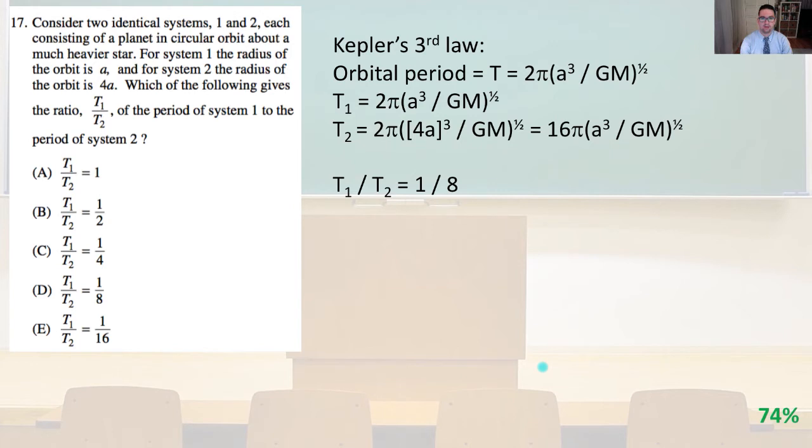So t1 equals 2 pi times the square root of a cubed over gm. t2 equals 2 pi times the square root of 4a cubed divided by gm, and that's going to equal 16 pi times the square root of a cubed over gm. So we can see 2 pi divided by 16 pi, that's going to be t1 divided by t2, the others cancel out.